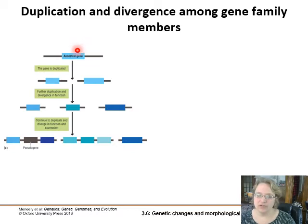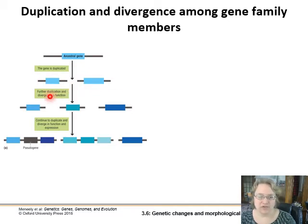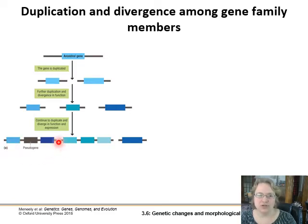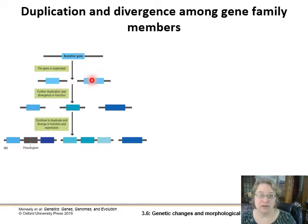Once you have duplication events, you've got your ancestral gene that gets duplicated, and then it might get duplicated again, and you start to see different functions emerging — differences in function, differences in expression pattern. A pseudogene is a remnant that's no longer functional, but it's still there and you can use it to look back in molecular time at how the ancestral gene might have looked.